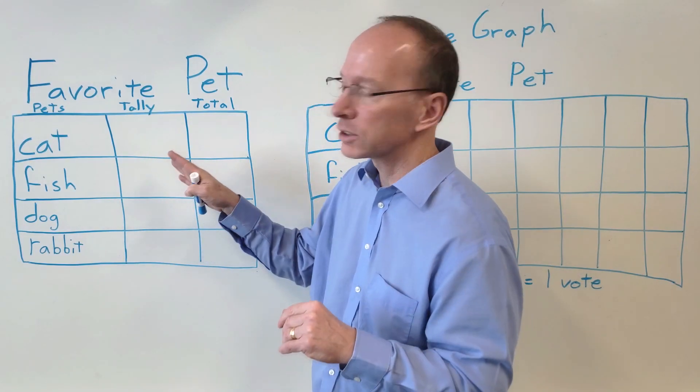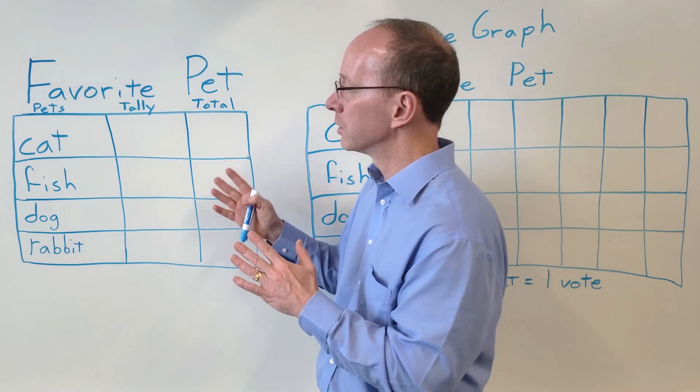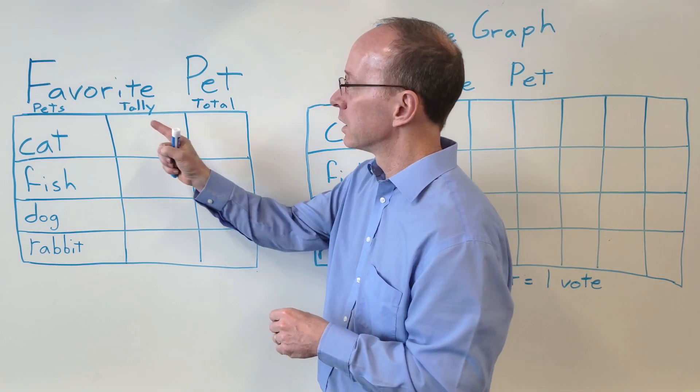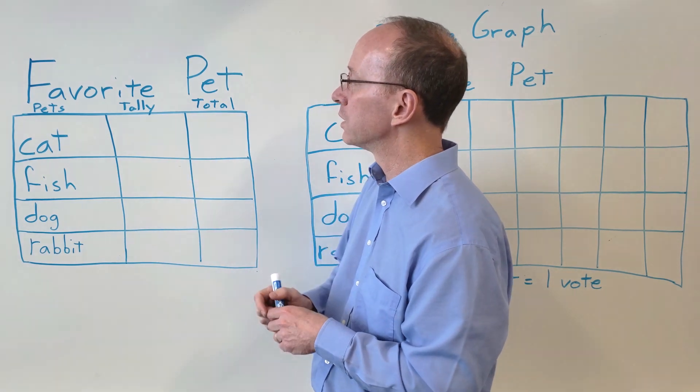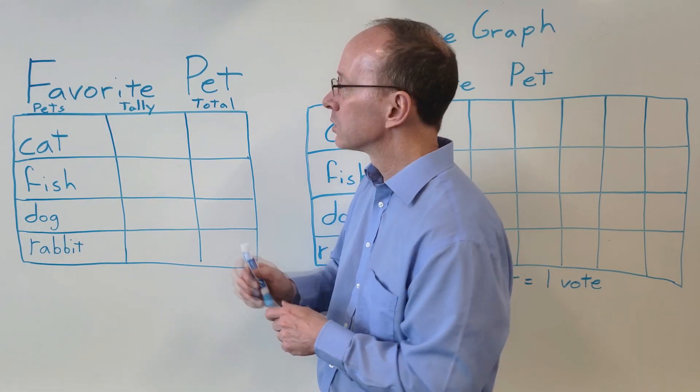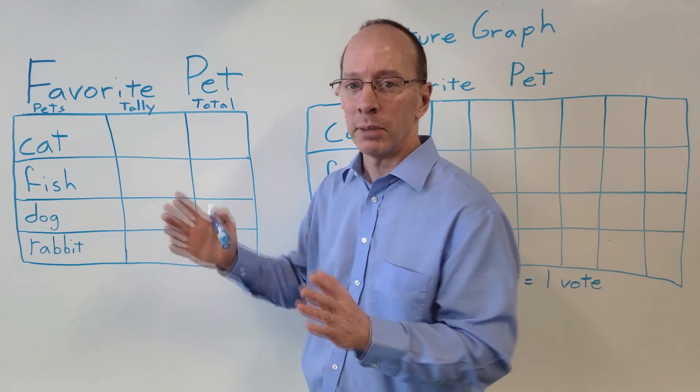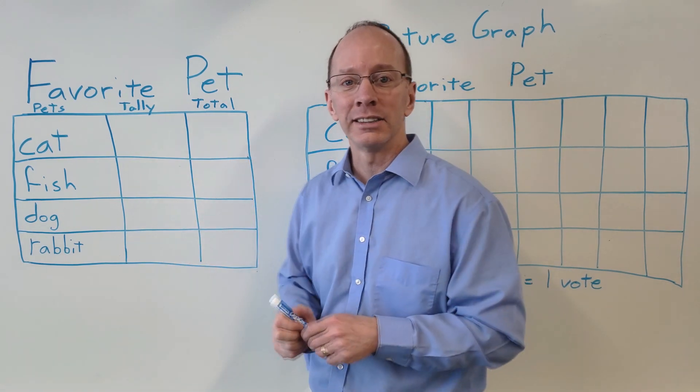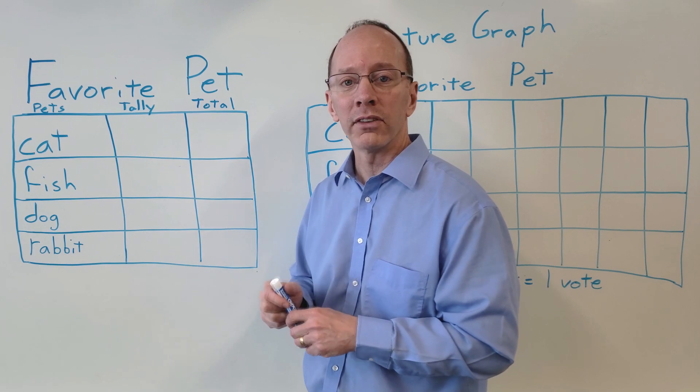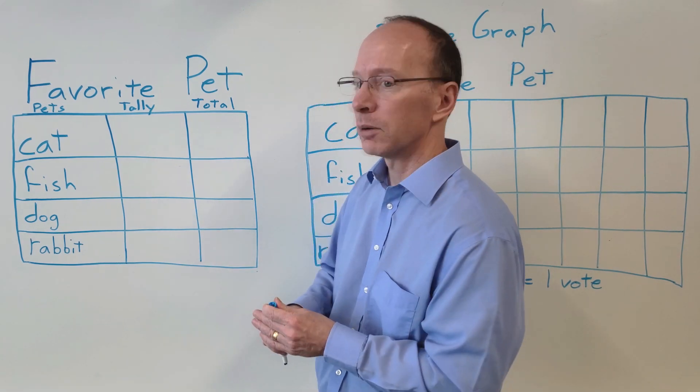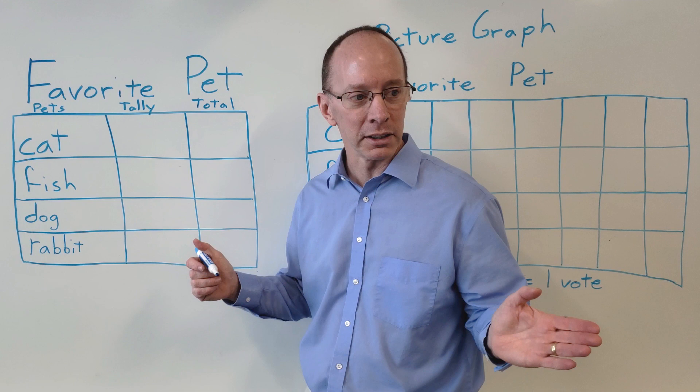But right now let's review real quickly on how to do a survey. For instance, the question we have on our survey is, what is your favorite pet? So first we're going to take tallies of everybody's vote. People in the class are going to vote to see and tell me about what their favorite pet is. So for example, let's ask the class real quick what their favorite pet is.